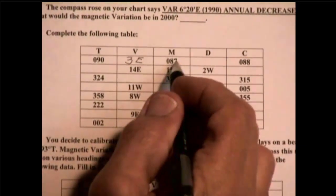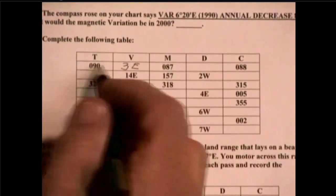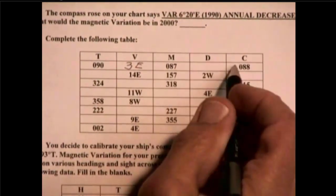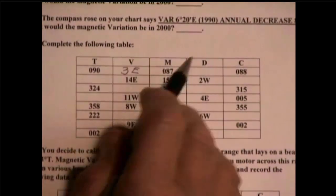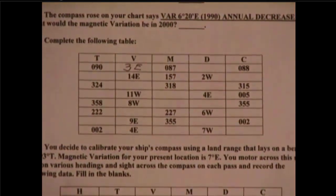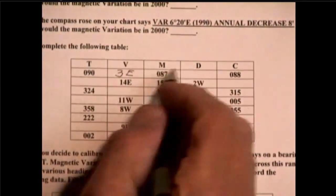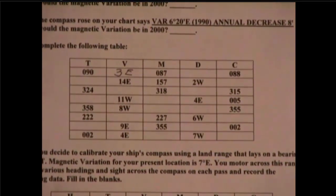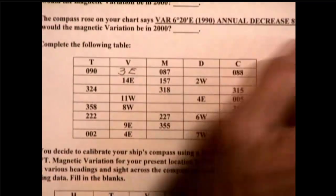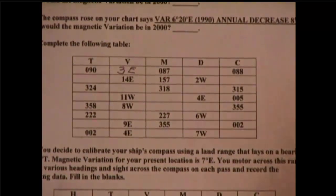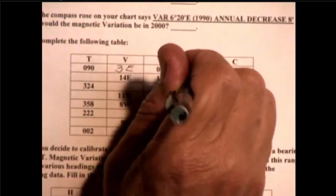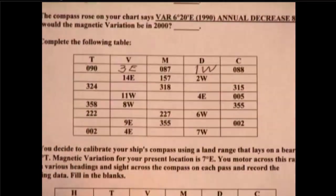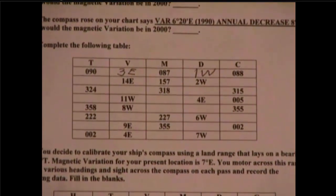And that agrees with these two numbers. Now, going from magnetic to compass, it's an increase, a plus of 1. And going from left to right, in this table, for a plus 1, would have to be westerly. So, this is 1 west.